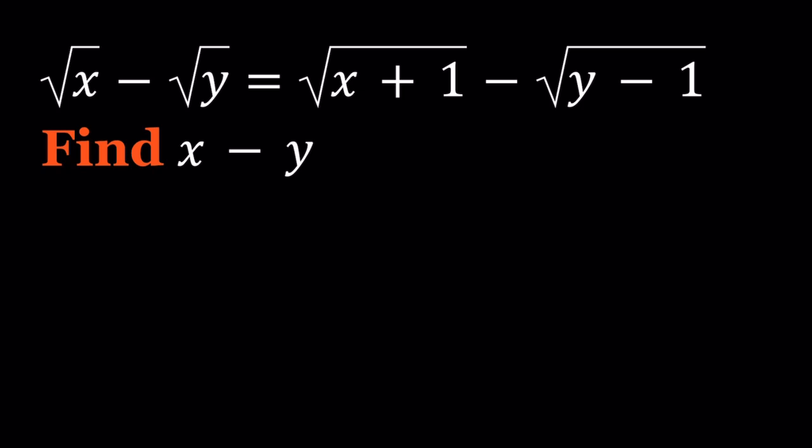I'm trying to find x - y, and here's what I'd like to do. Even though there's a couple different ways to go about it, I'm going to square both sides. That makes sense, right? When we have radicals we square both sides. Let's go ahead and do it.